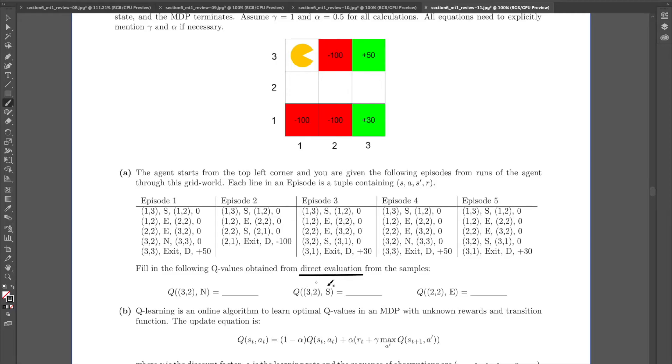And recall that the way direct evaluation works is basically, you know, so in the first case, what I would do is I would see, I'm trying to estimate the Q-value of 3, 2, n. So I'll look up what are all the places where I can find that in all of my episodes. So here's one place where I see it. Not here, not here. The one more place is over here. Right, those are the only two places. And you would see what is the future reward that was obtained by Pac-Man in each of these cases.